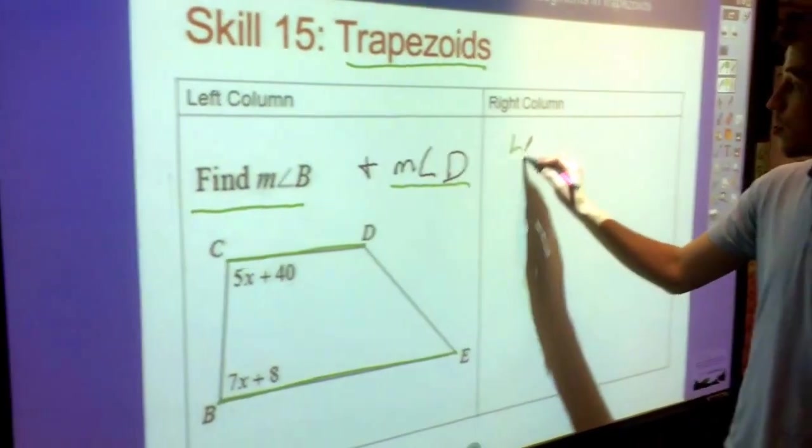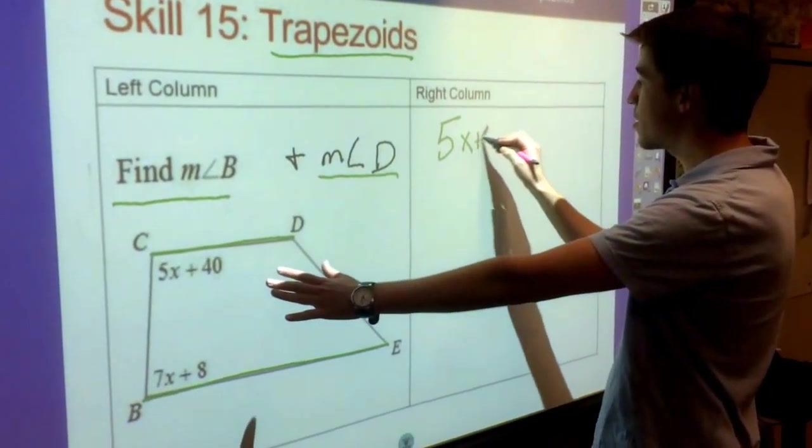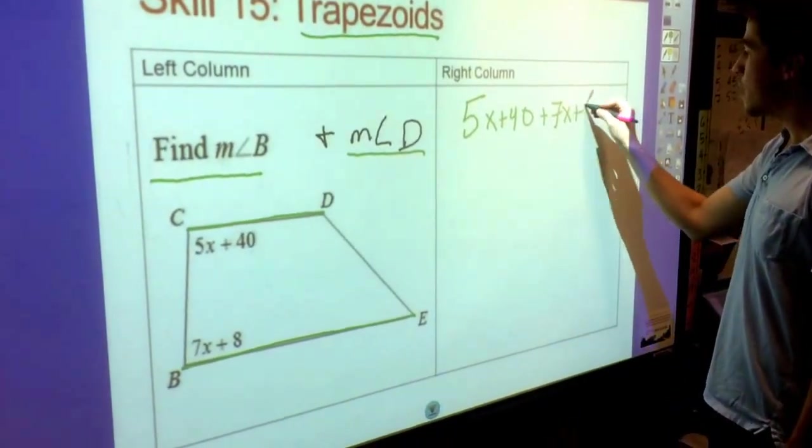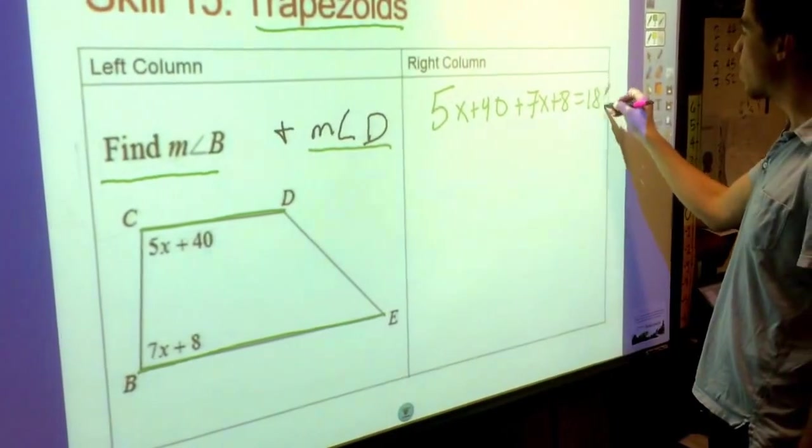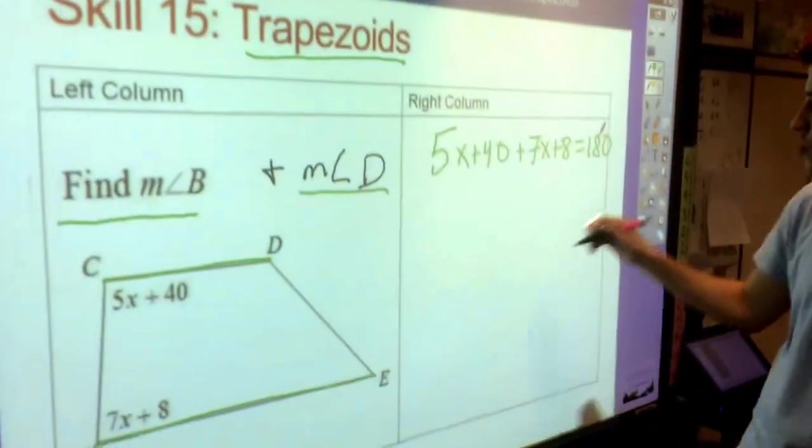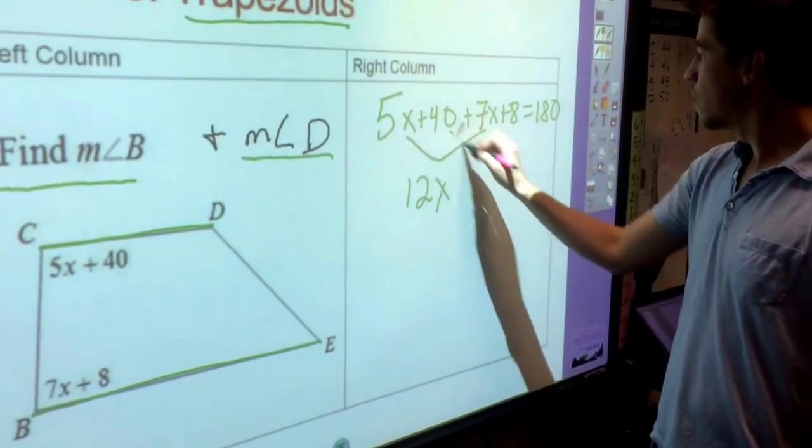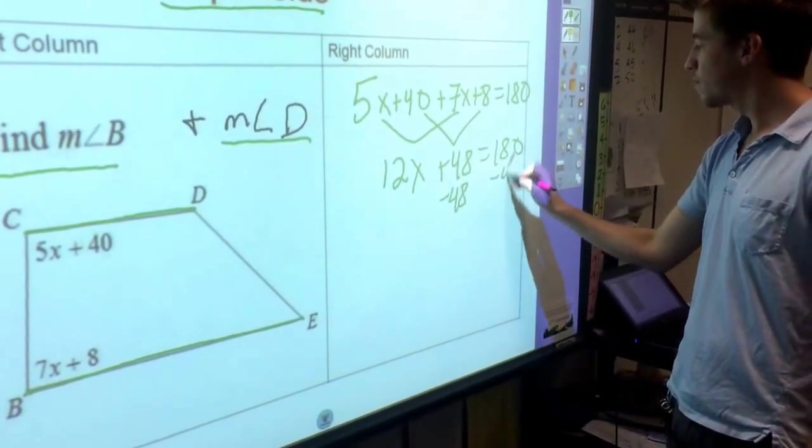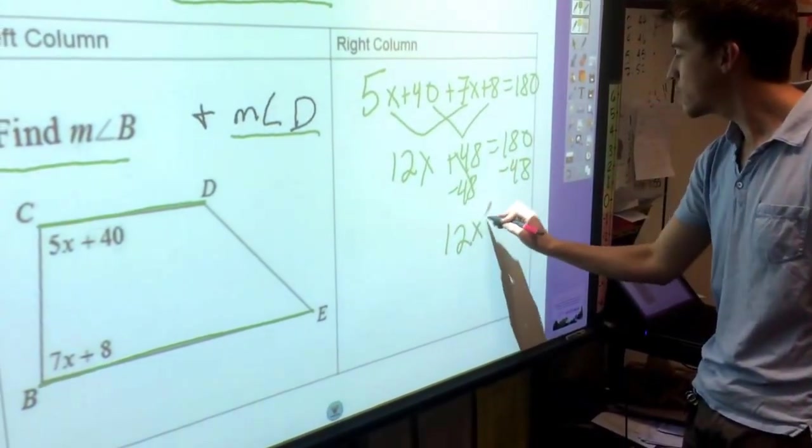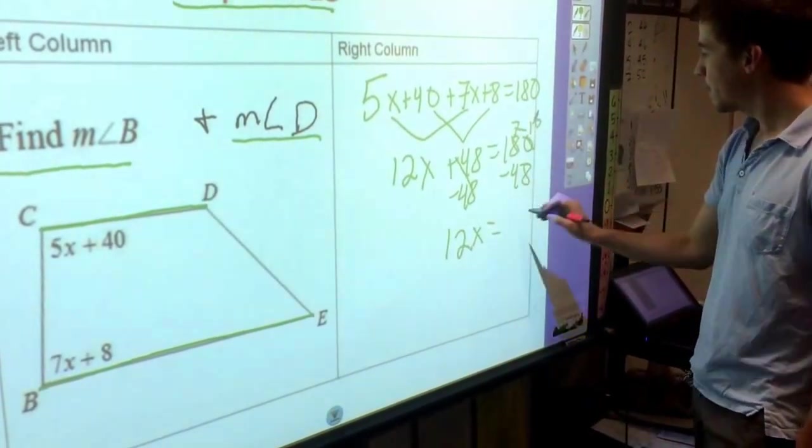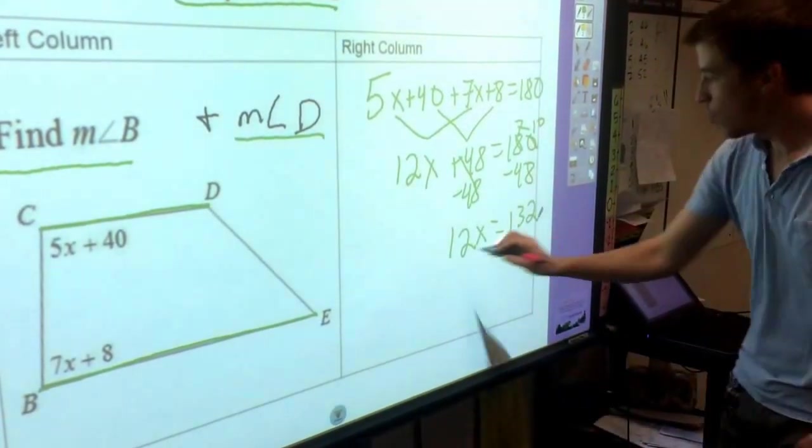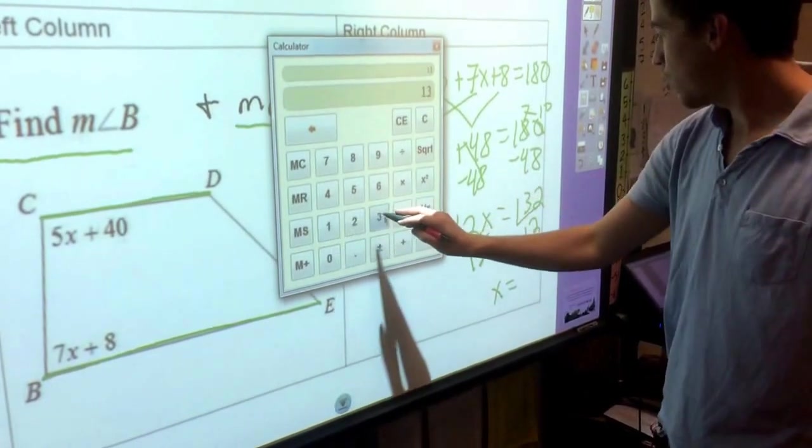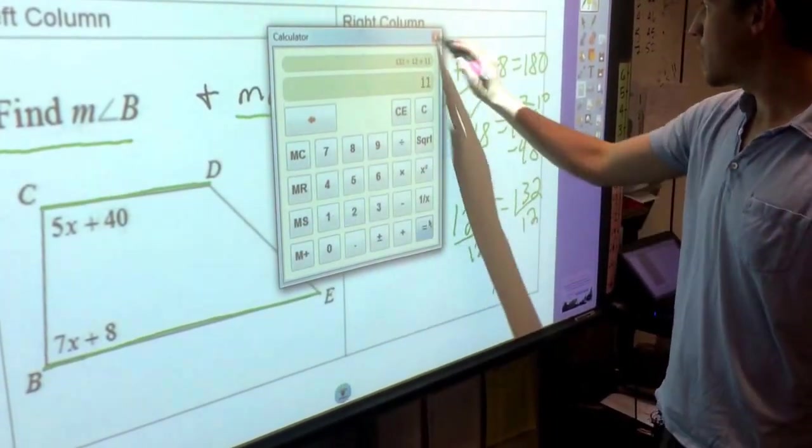So let's go ahead and try and solve for X. We're going to take our first angle, 5X plus 40, that was angle C, plus what we know about the other one, 7X plus 8, and those have to add together to equal 180. Now we just have to solve for X. We'll combine our like terms and subtract 48. So 12X equals 132. We'll divide by 12 and we'll get that X is equal to 11.